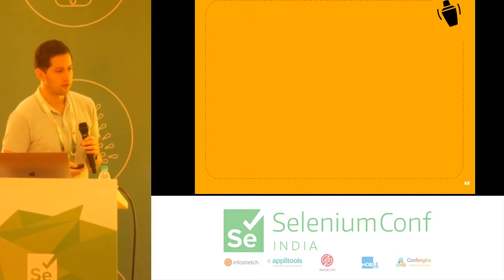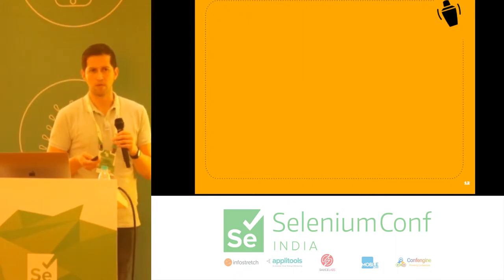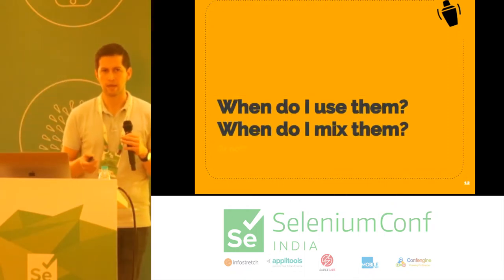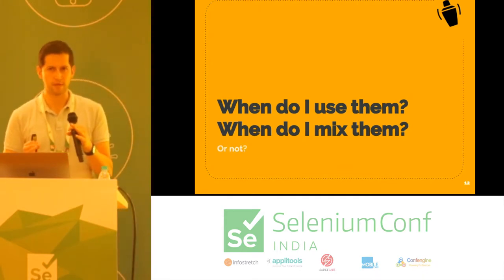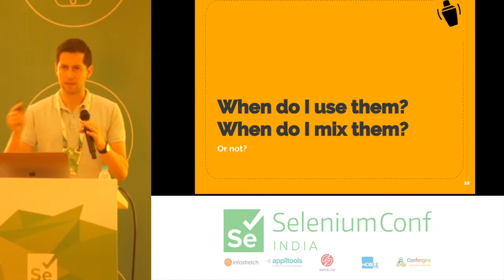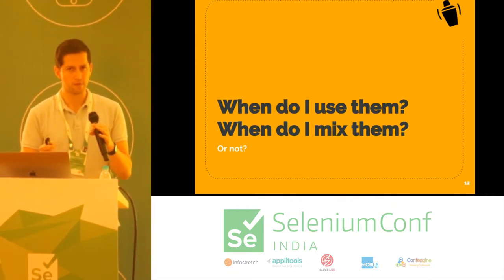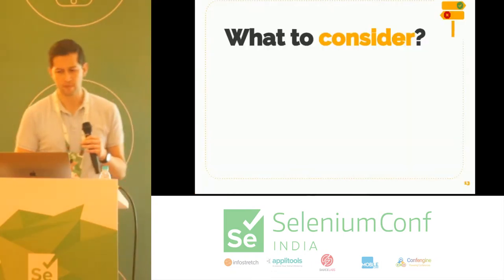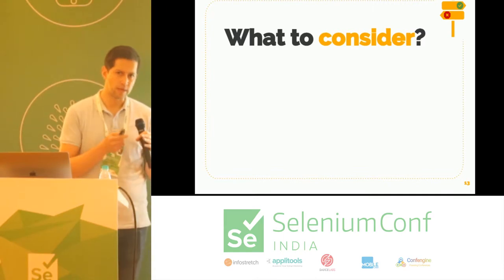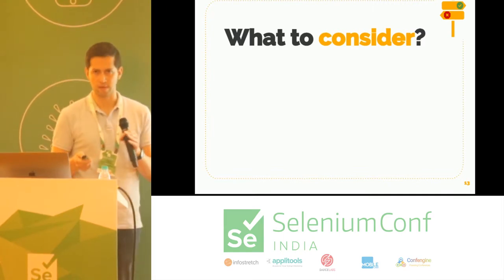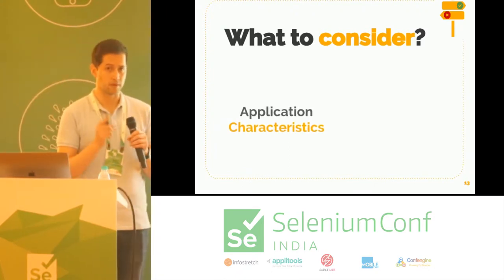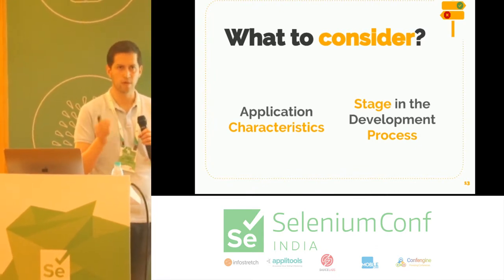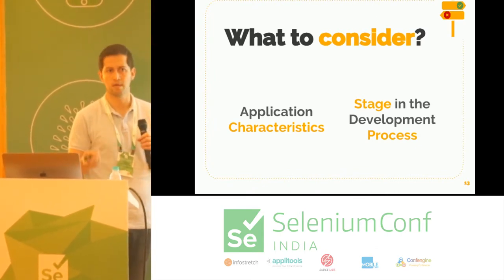As a team, we were thinking what we should do. We could propose solutions outright, but then we thought we should take one step back and think — we have these three types of testing, but does it make sense that teams use all three right away? Maybe we should think first about how to mix them or how not to mix them. To decide that, we defined two main criteria: the application characteristics and the stage in the development process.